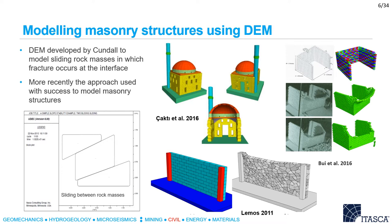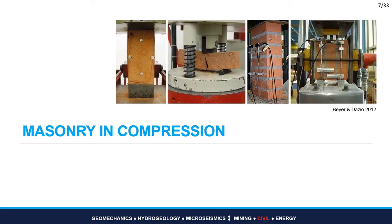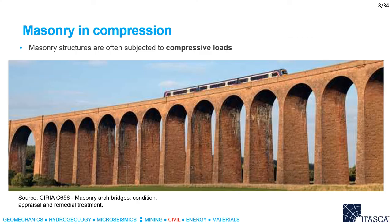The discrete — or otherwise called distinct — element method was developed by Peter Cundall in the early 1970s to model sliding rock masses in which failure occurs at the interface. More recently, the method has been successfully used to model masonry structures in which the failure mechanism is governed primarily by the masonry unit-mortar interface characteristics. DEM has been implemented in UDEC and 3DEC software, which were developed by Itasca.